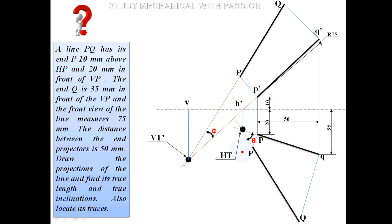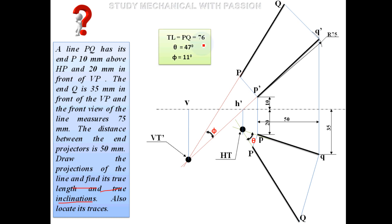We can apply the plane rotation method for traces. The final answers for Problem 1: the true length PQ measures 76mm, theta equals 47 degrees, and phi equals 11 degrees.